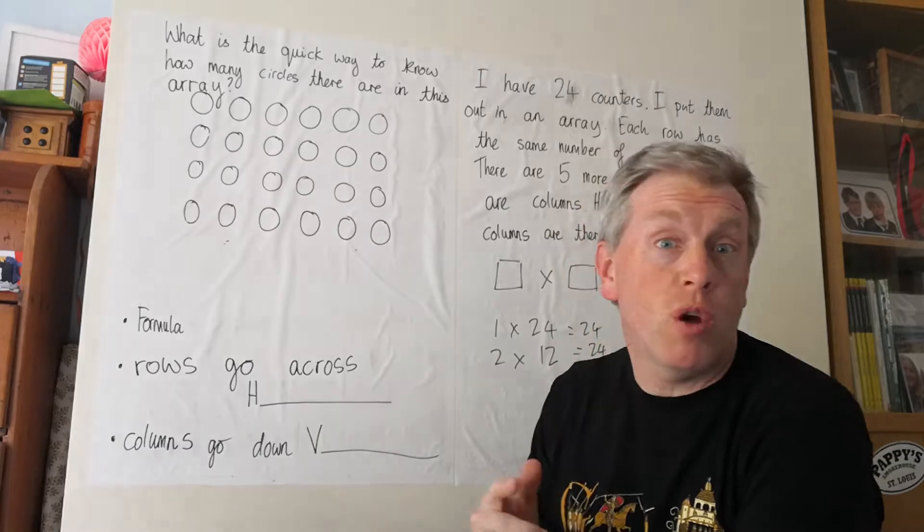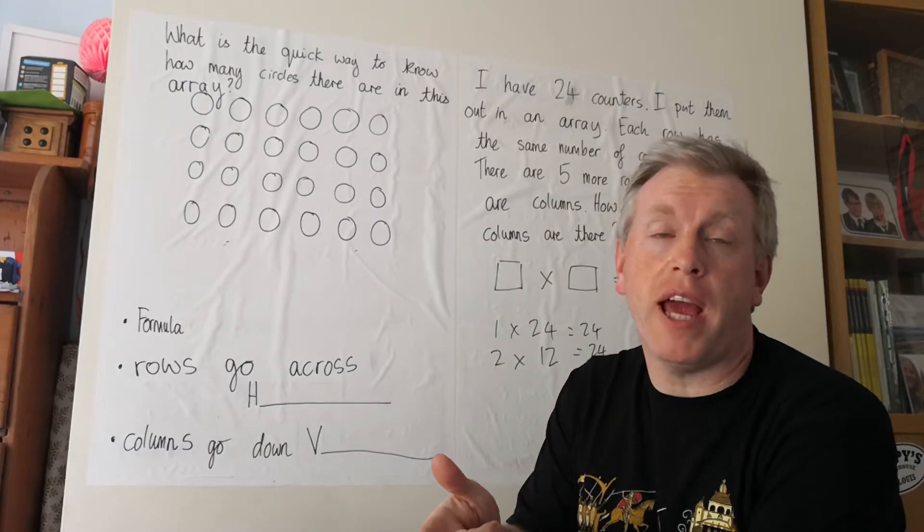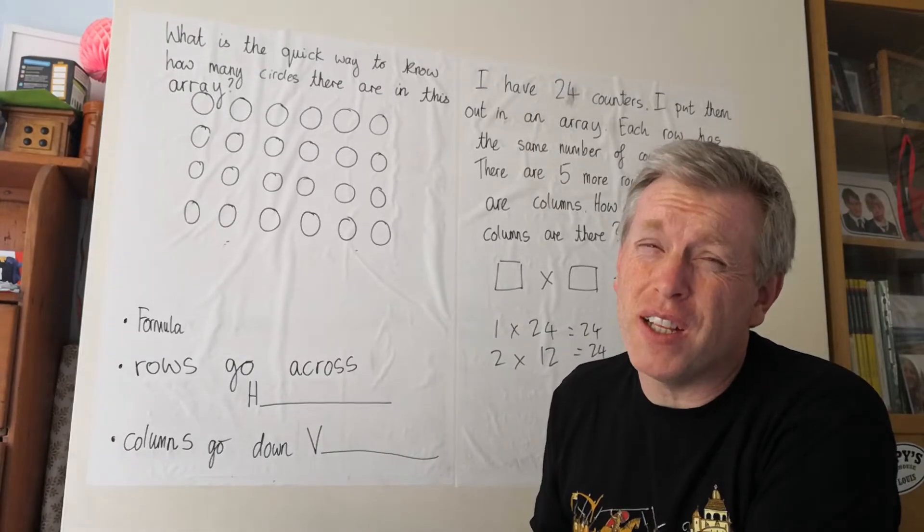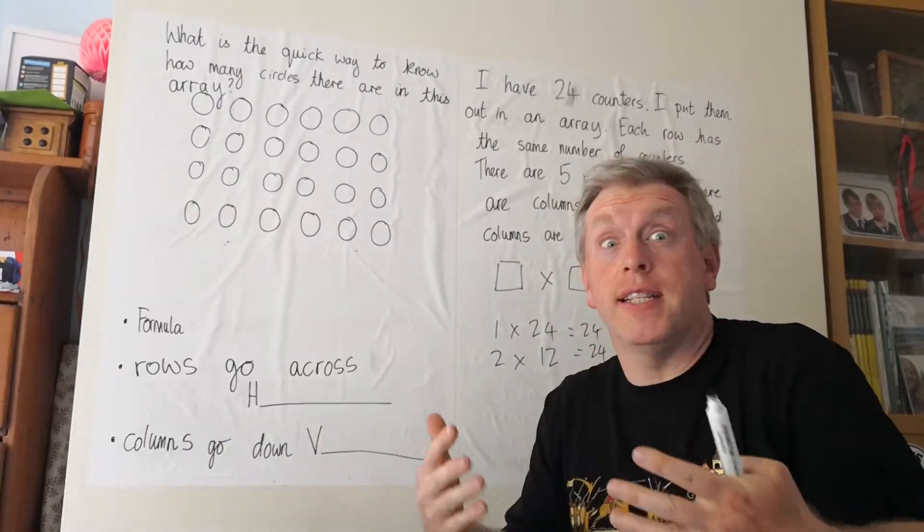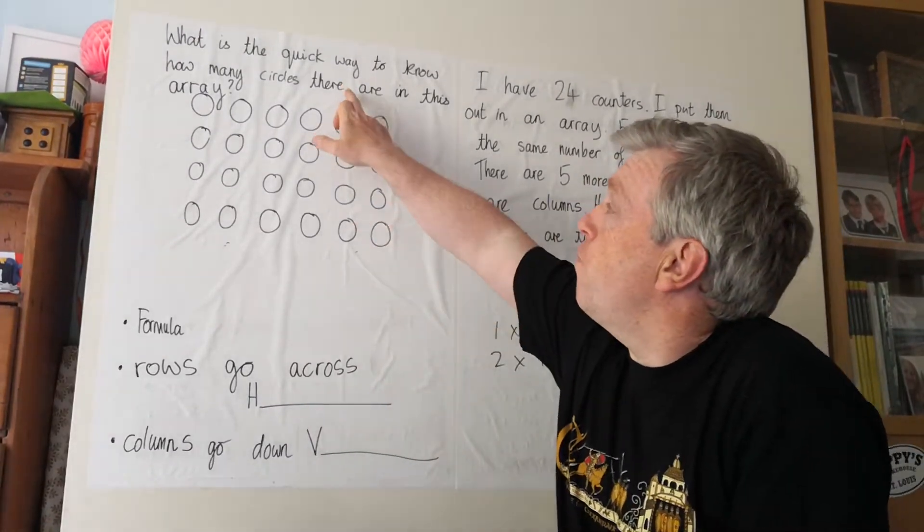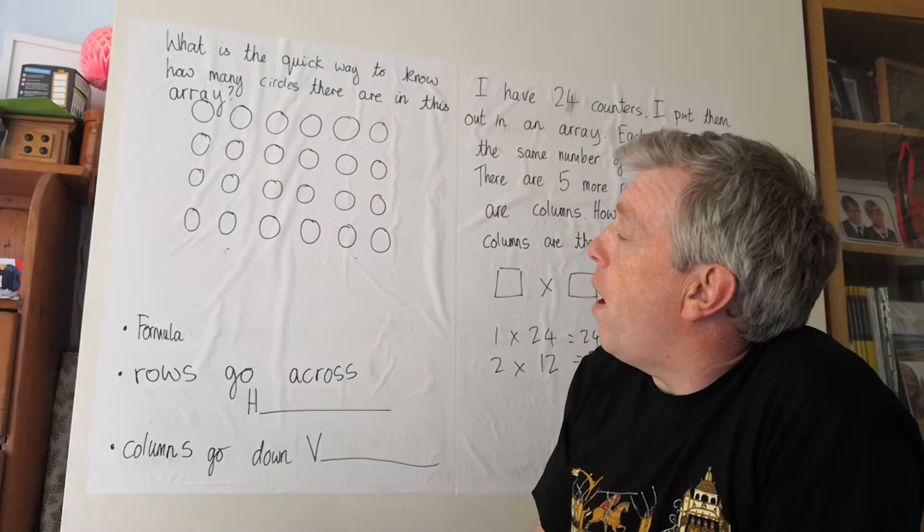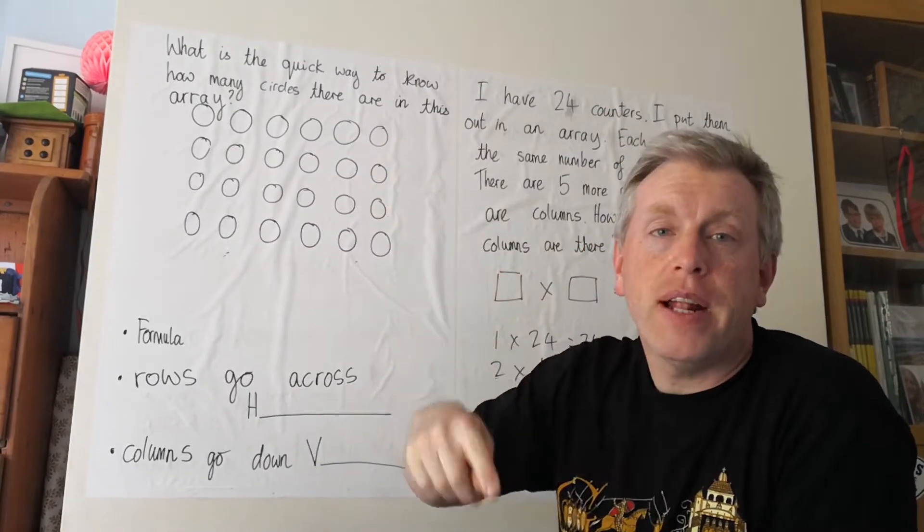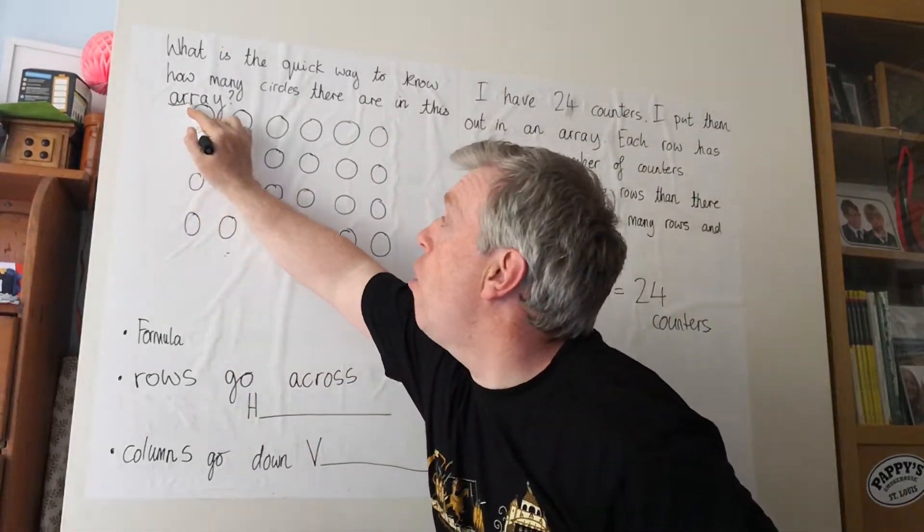I've got some more maths problems for anyone who wants to have a go using multiplication and division and building up some really important things that we're going to use in Year 5 and Year 6 a lot more. So, first question, what is the quick way to know how many circles there are in this array?